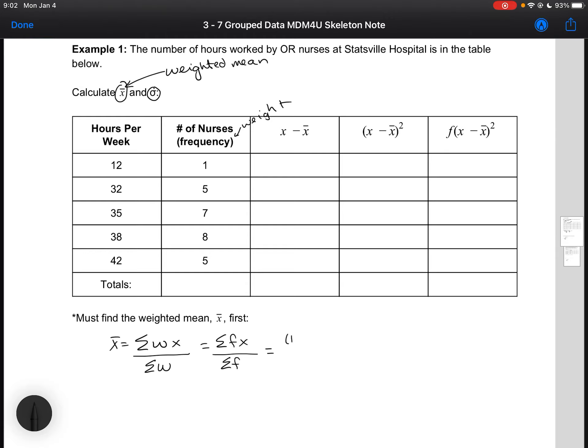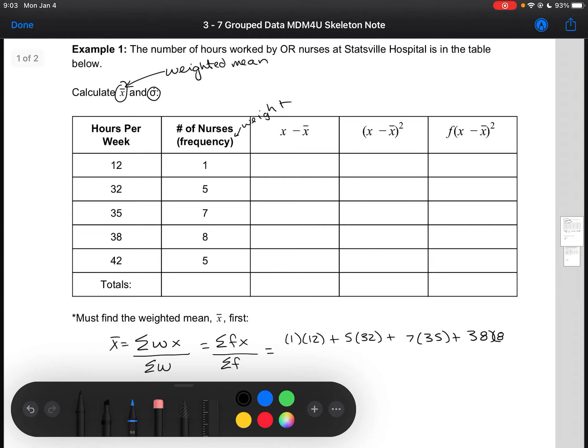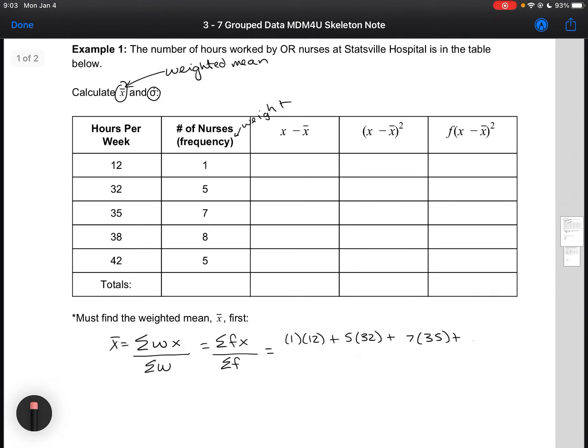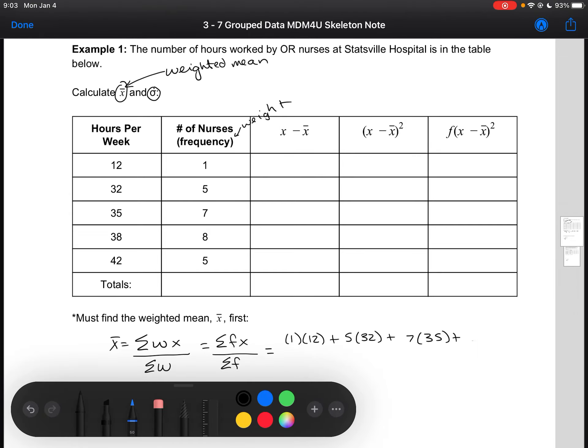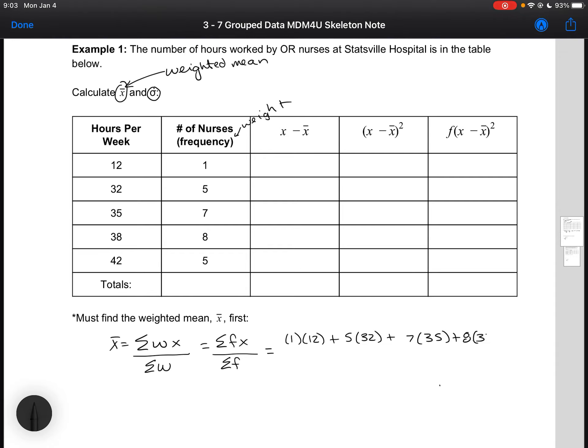So let's write this out to find our weighted mean. So we've got 1 times 12, plus 5 times 32, plus 7 times 35, plus 38 times 8. So I wrote that one backwards. Let's switch that around. And then we're going to divide by the sum of our frequencies.